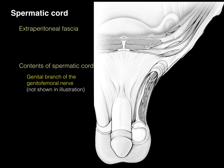The genital branch of the genitofemoral nerve enters the deep inguinal ring, travels through the inguinal canal, comes out the superficial inguinal ring, and provides sensory innervation to the spermatic cord.